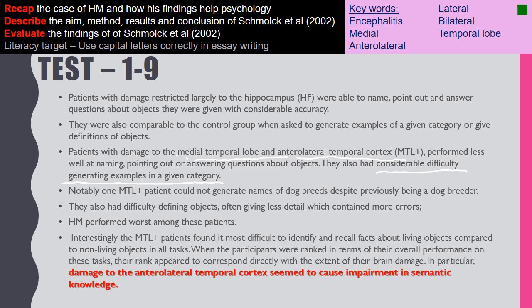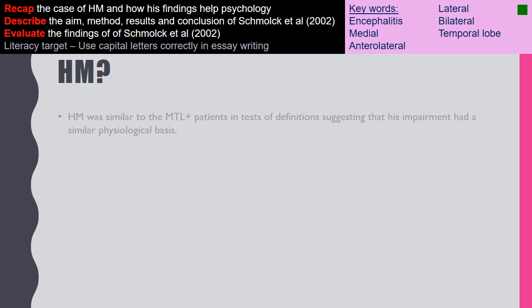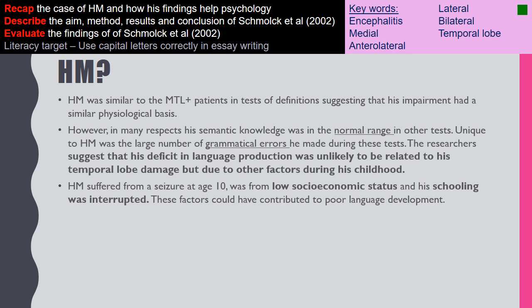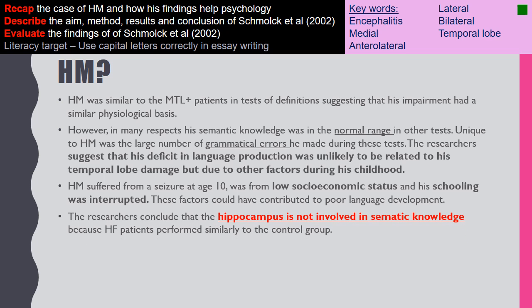These patients had difficulty defining objects, giving less detail and more errors. HM performed worst among all patients. Interestingly, medial temporal lobe patients found it most difficult to identify and recall facts about living objects. Participants' rankings corresponded directly with the extent of their brain damage — the worse their recall, the worse their brain damage. What was unique to HM was a large number of grammatical errors during testing. The researchers suggested this deficit in language production was unlikely related to his brain damage.